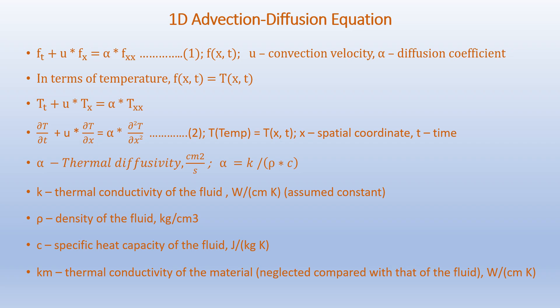Here k, rho, and c are the thermal conductivity of the fluid, the density of the fluid, and the specific heat capacity of the fluid, with units as given. We basically ignore the material properties of the porous metal itself, and consider that the fluid flow governs the temperature distribution.